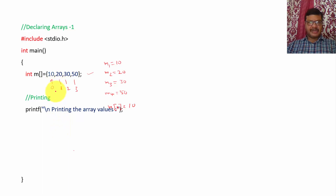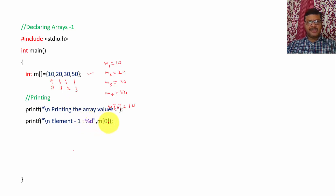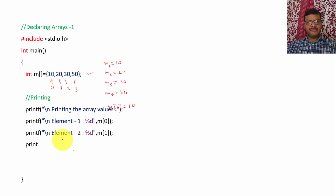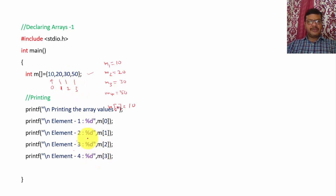From the next line onwards I am printing this array value. I am writing a printf statement — element one: percent d, m[0] — m[0] means value 10 will be displayed. For the second value, element two, m[1], value 20 will be displayed. Similarly, element three gives 30 and element four gives 50. Suppose if you are storing 10 values here, you can write 10 printf statements.